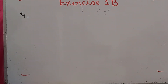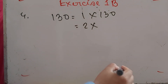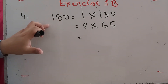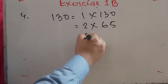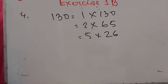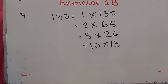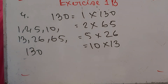Number 4: Write down all the factors of 130. Dividing 130 by 1 gives 130; by 2 gives 65; it's not divisible by 3 or 4; dividing by 5 gives 26; dividing by 10 gives 13. So the factors of 130 are 1, 2, 5, 10, 13, 26, 65, and 130.